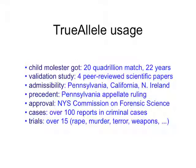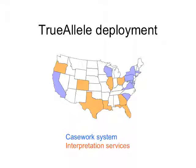So if you get a number like six, it's real. TrueAllele was used in the case I described. The child molester got a match statistic of 20 quadrillion, and he got 20 years. We've published four peer-reviewed scientific validation papers. TrueAllele has been admitted in Pennsylvania, California, and Northern Ireland after defense challenges. The work we do is both for defense and prosecution. There's an appellate ruling with a Supreme Court confirmation for precedent in Pennsylvania. TrueAllele has approval from the New York State Commission on Forensic Science for use in the state lab in Albany. We've written over 100 reports in criminal cases, and there have been over 15 trials, in crimes of rape, murder, terror, weapons, and more. TrueAllele is being deployed around the U.S. and around the world.